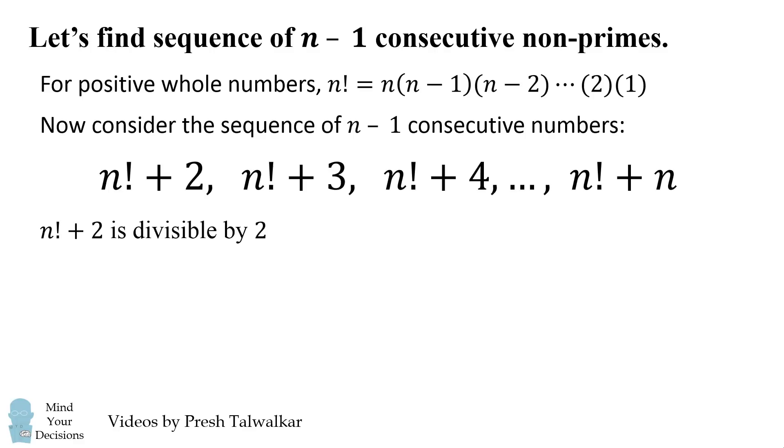Now the first number, n factorial plus 2, is divisible by 2. That's because n factorial is divisible by 2, and 2 is also divisible by 2.